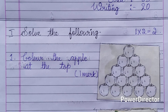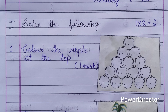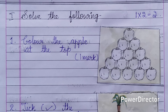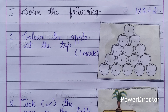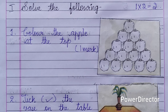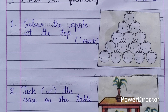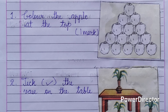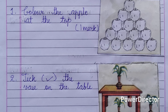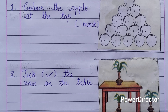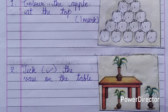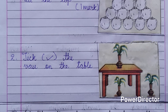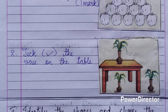Two questions are given for two marks. First question: colour the apple at the top. You can give this picture and ask the children to colour the apple at the top. And then number 2: tick the ways on the table. From the picture, the children have to tick the ways which is on the table.